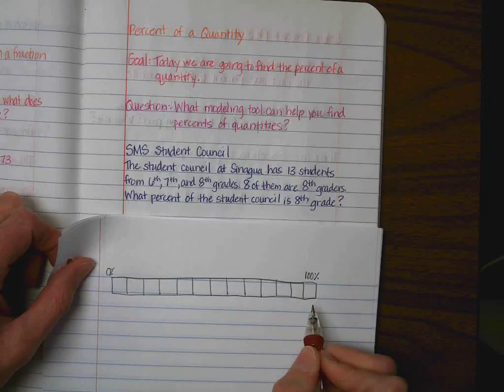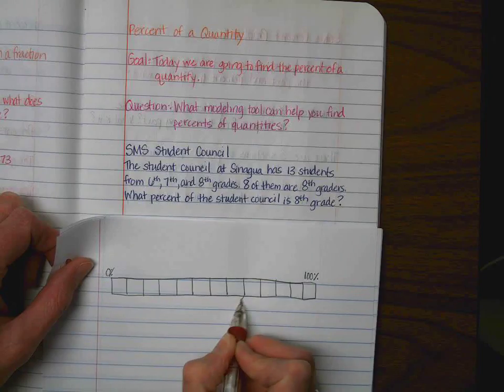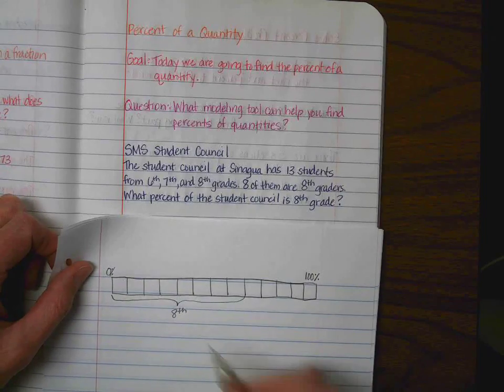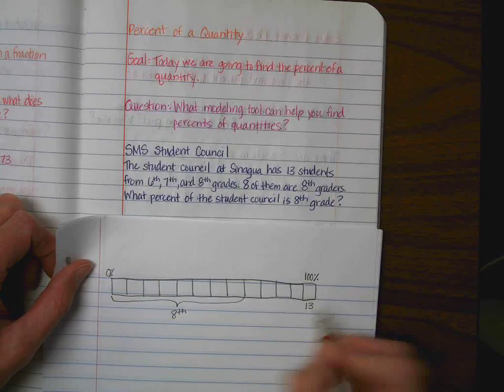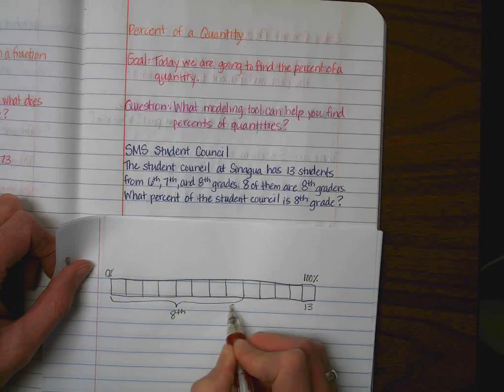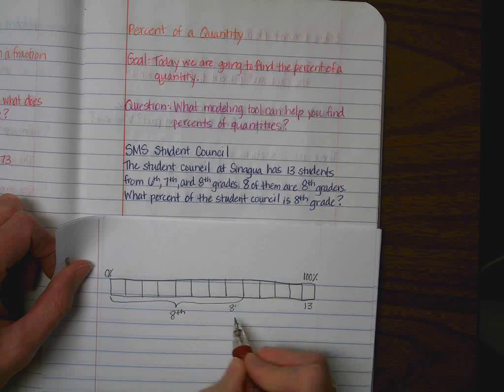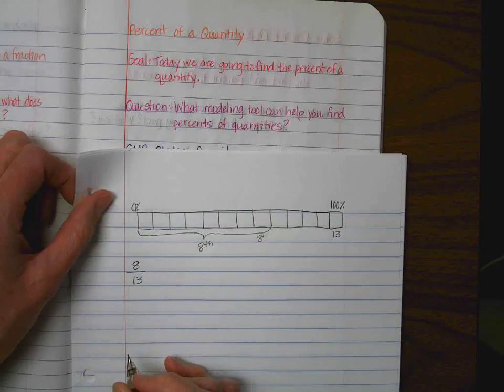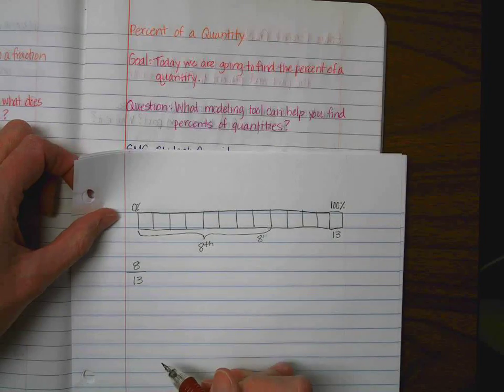So, if we know that 8 out of the 13 are 8th graders, we would go 1, 2, 3, 4, 5, 6, 7, 8. So, from here to here are 8th graders. The question is, what would be the percent of 8th grade? So, we know that it takes 13 to have 100% and then we know that right here is the 8th box and that all of these are 8th graders. So, that means 8 out of the 13 students are 8th graders. So, the question that we have to figure out is, what percentage is represented by each box?